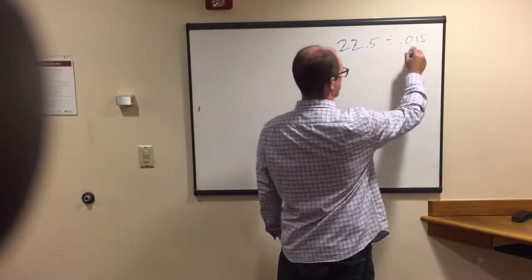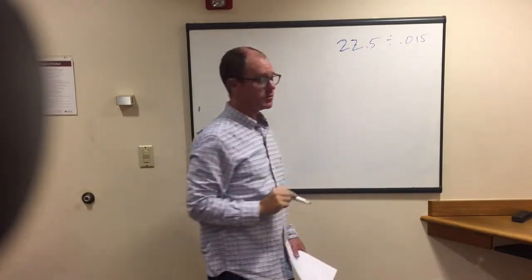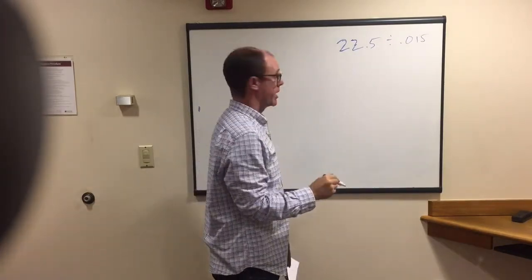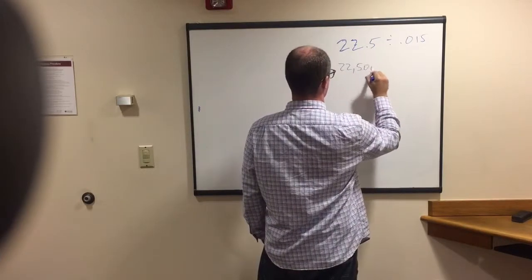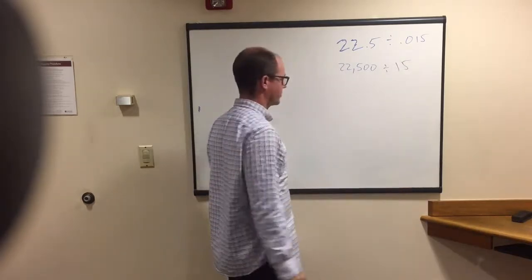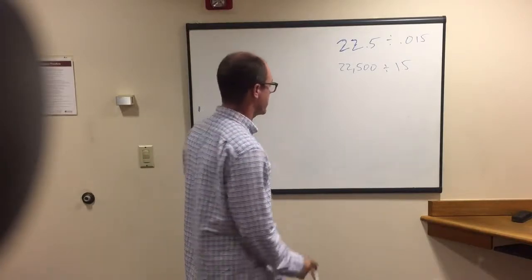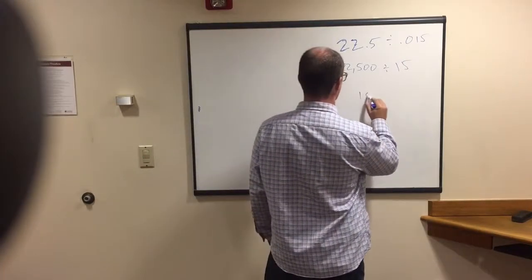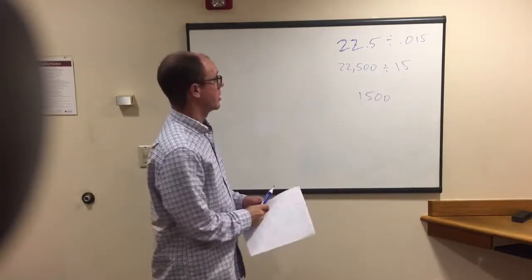Three spaces - one, two, three - and three spaces, and we're going to add two zeros. So what we're going to have here is 22,500 divided by 15. Now you can just do your basic division, and you're going to end up with 1500 for your final answer on that one.